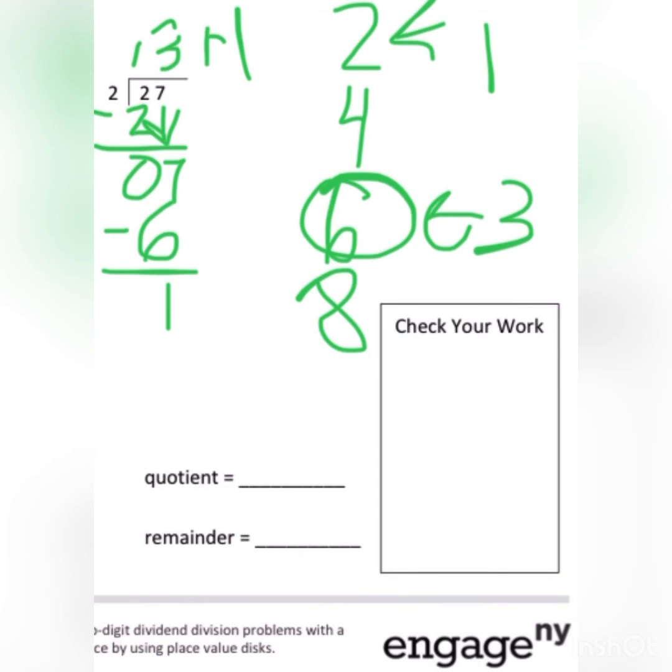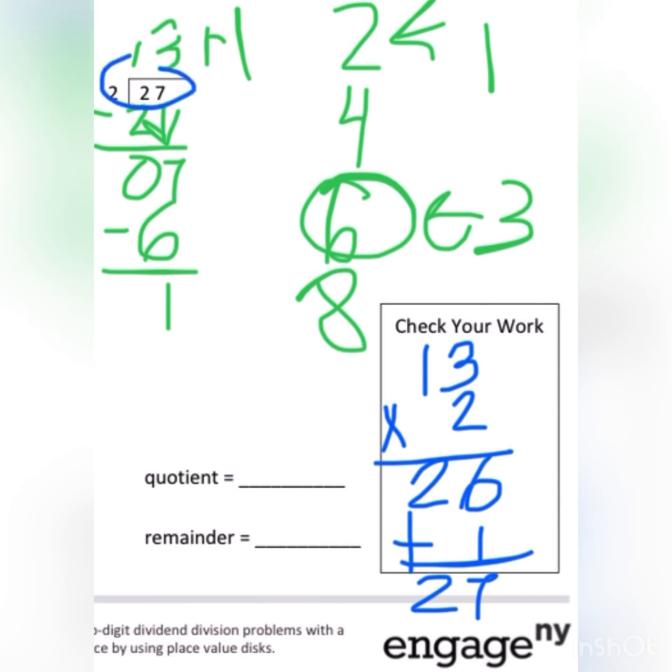Now we can check our work. So if you remember our steps from the last problem, the first thing we're doing is multiplying our answer which was 13 without the remainder. We're multiplying it by 2 because that's the number we divided by. So 13 times 2. 3 times 2, well if I count by 3 two times I get 6. 2 times 1 is 2. And don't forget we have to add our remainder. Our remainder was 1. So 26 plus 1 equals 27. And I get what I started with. So I know that my answer was correct. So for this the quotient was 13 and the remainder was 1.